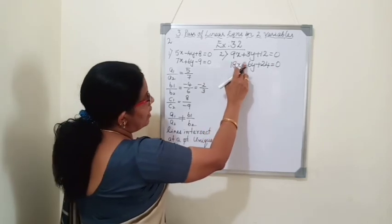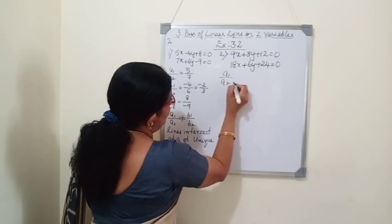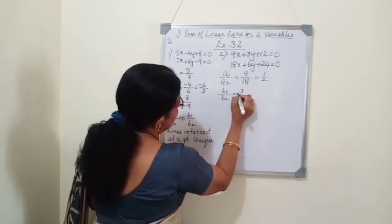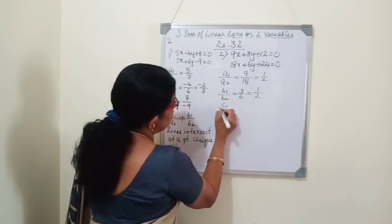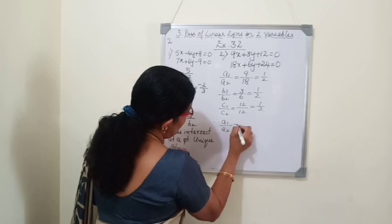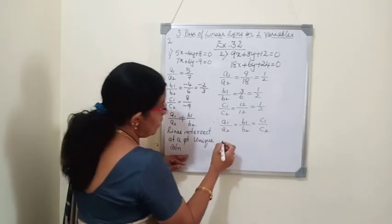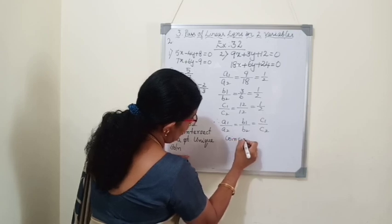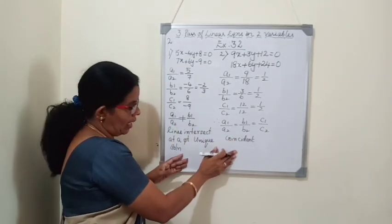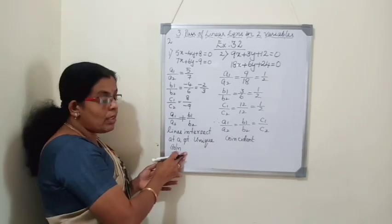Second question: 9x plus 3y plus 12 equals 0 and 18x plus 6y plus 24 equals 0. a1 by a2 equals 9 by 18 equals 1 by 2. b1 by b2 equals 3 by 6 equals 1 by 2. c1 by c2 equals 12 by 24 equals 1 by 2. Therefore a1 by a2 equals b1 by b2 equals c1 by c2, so the lines are coincident — infinite number of solutions, consistent.